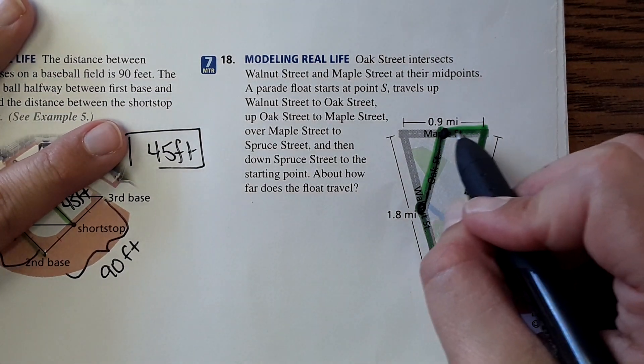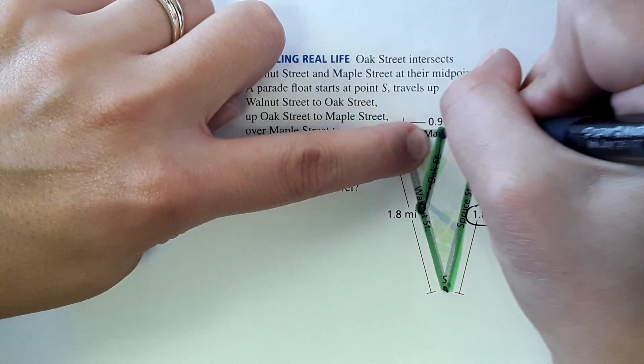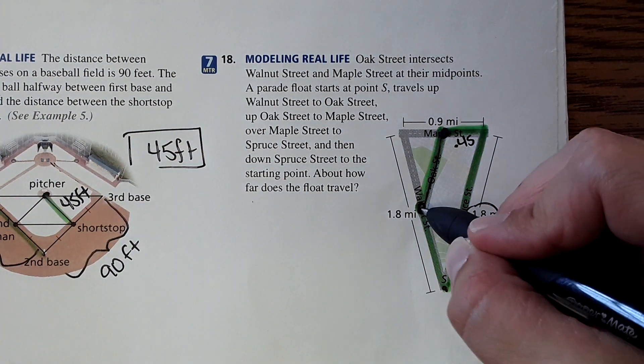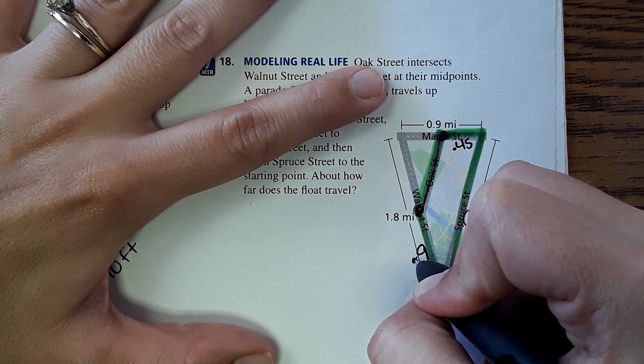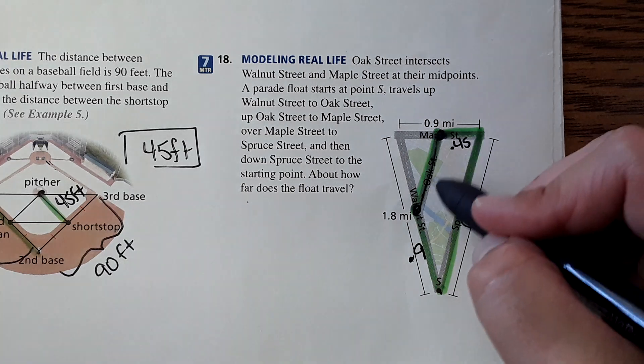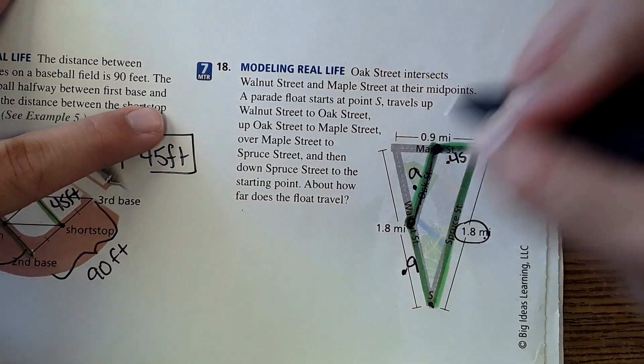This right here, this would hit at the midpoint, so half of 0.9 would be 0.45 here. And then right here this hits at the midpoint as well - 1.8 divided by 2 would be 0.9. And then this segment right here would be half of 1.8, so that would be 0.9 as well.